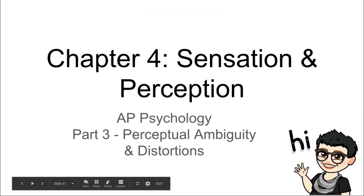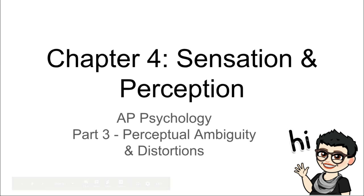Hello, AP students. This is Mrs. Politzki, and I have notes for Chapter 4, Sensation and Perception. We're going to close up our notes today in Part 3, talking about perceptual ambiguity and distortions.